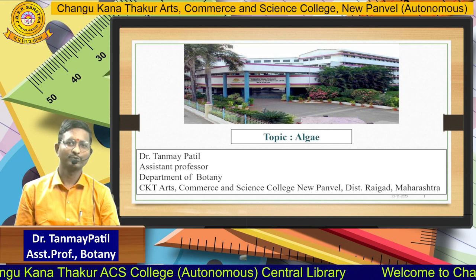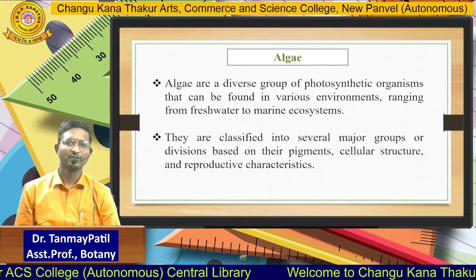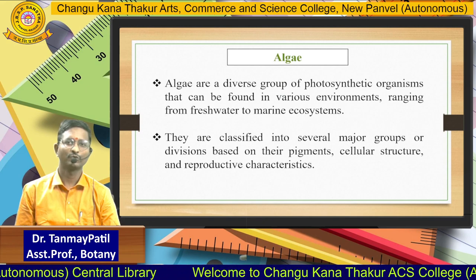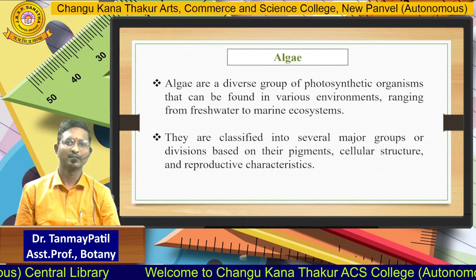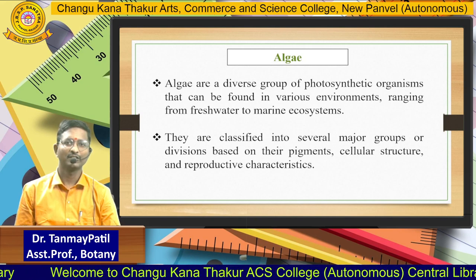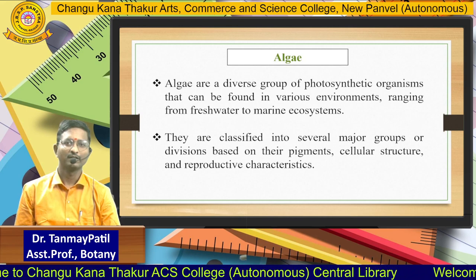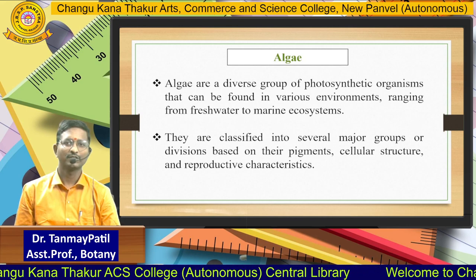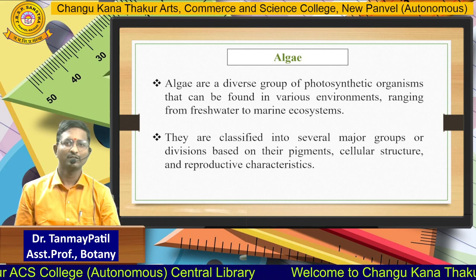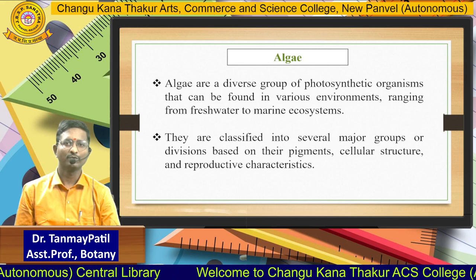Today we have to see Algae. Algae are a diverse group of photosynthetic organisms that can be found in various environments ranging from freshwater to marine ecosystems. They are classified into several major groups or divisions based on their pigments, cellular structure and reproductive characteristics.